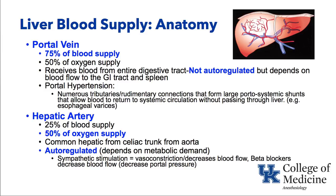Again, focusing on the blood supply to the liver: the portal vein supplies 75% of the blood while the hepatic artery supplies 25%, but oxygen is equally supplied by both. The portal vein is not autoregulated. It receives blood from the entire digestive tract, and when portal hypertension occurs — for example with cirrhosis — pressure builds up in the venous system. Numerous tributaries and rudimentary connections form large portal-systemic shunts that allow blood to return to the systemic circulation without passing through the liver. An example of that is esophageal varices.